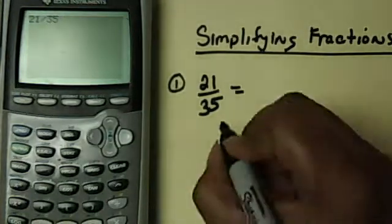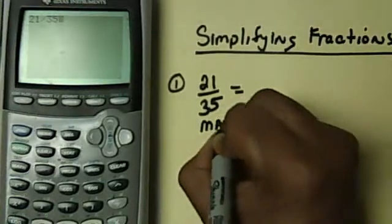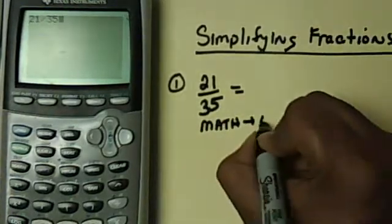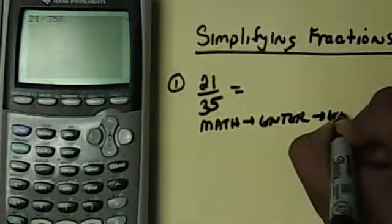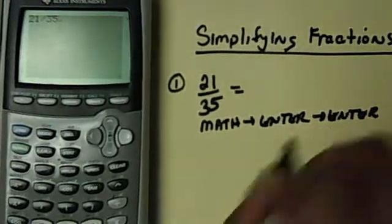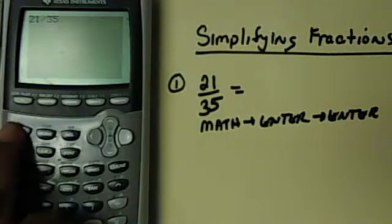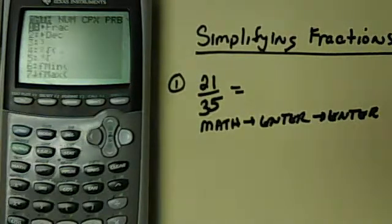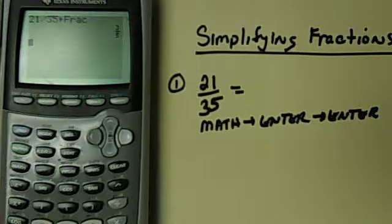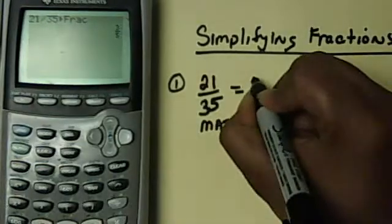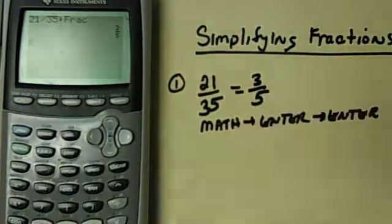And then you hit Math, and then you hit Enter twice. So you hit the Math button, which is on the left-hand side right there, and then you hit the Enter twice. As you see, you select a fraction, Enter, Enter, so I call it Math, Enter, Enter, and then you'll get 3 over 5 is your answer there.